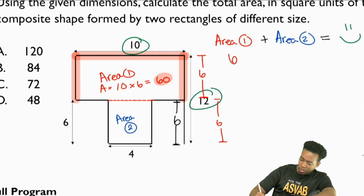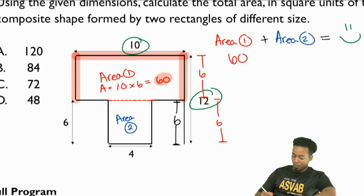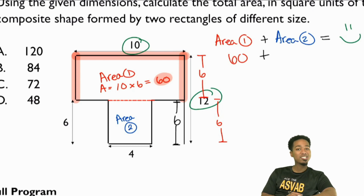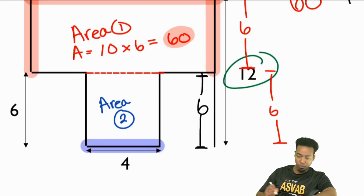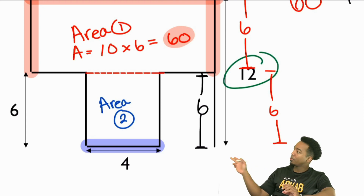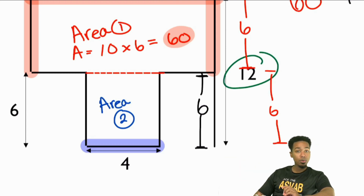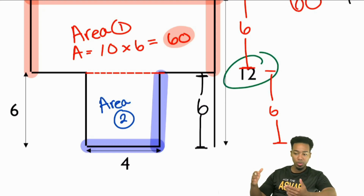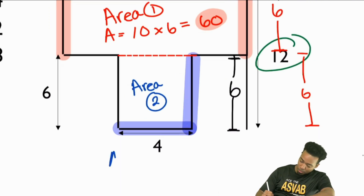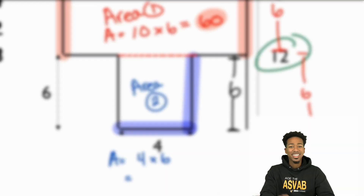We want to work a little quickly during the real test, but let me show you exactly where we're coming from. We got the first area — now we need the second area. The second area isn't too hard because we already have that the base is 4. We just need the other dimension — the height or width — and that's going to be 6. So to get that area, 4 times 6 is going to be what?